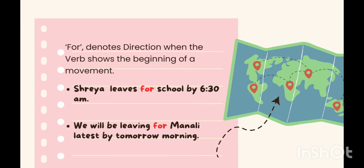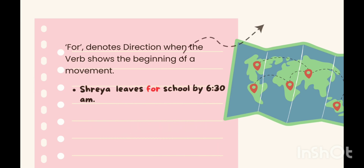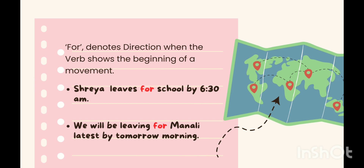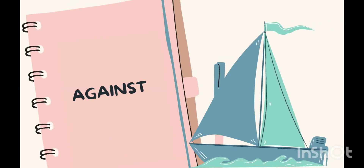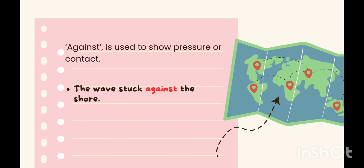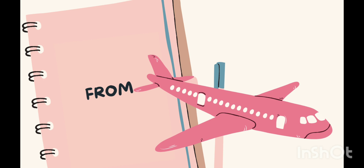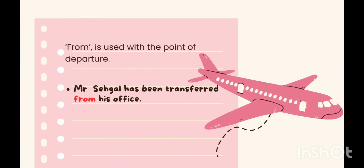'For' is used to denote direction when the verb shows the beginning of a movement. As in: 'Shriya leaves for school by 6:30 am,' or 'We will be leaving for Manali by tomorrow morning.' The preposition 'against' is used to show pressure or contact — example: 'The wave struck against the shore.' The preposition 'from' is used with the point of departure — example: 'Mr. Segal has been transferred from his office.'